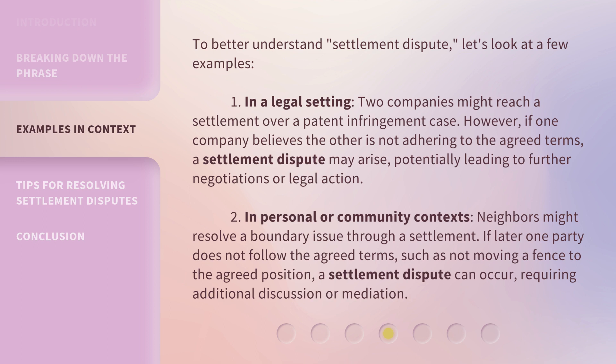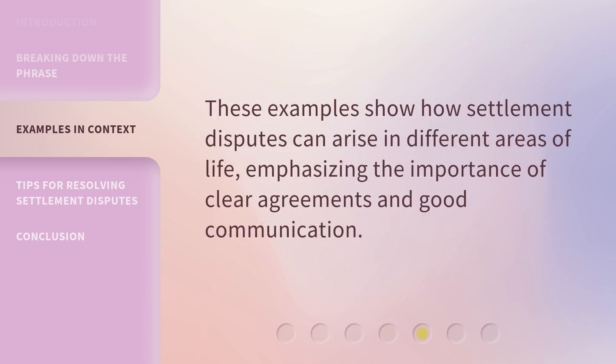In personal or community contexts, neighbors might resolve a boundary issue through a settlement. If later one party does not follow the agreed terms, such as not moving a fence to the agreed position, a settlement dispute can occur, requiring additional discussion or mediation. These examples show how settlement disputes can arise in different areas of life, emphasizing the importance of clear agreements and good communication.